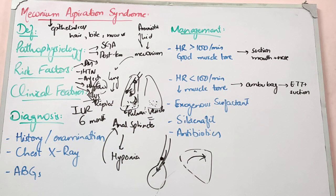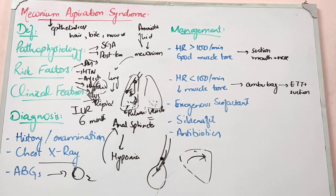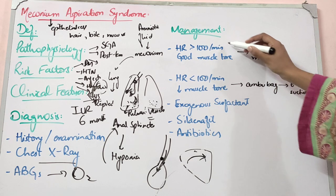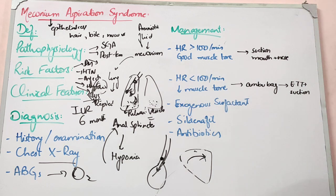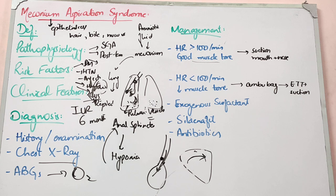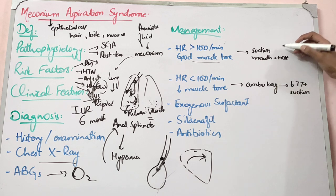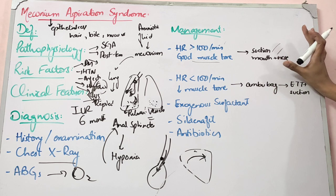In assessment, check arterial blood gases where you will find decreased oxygen. For management: if the child's heart rate is more than 100 beats per minute, which is normal for a neonate, and the muscle tone is good with vigorous activity and the child is alert, then there is no need for endotracheal intubation. Simply suction the mouth and nose.